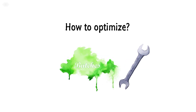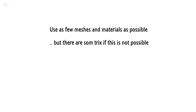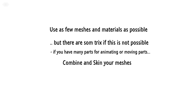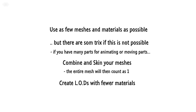How to optimize? The simplest solution is to use as few separate meshes and materials as possible. However, there are tricks that might help when this is not possible. If you need many parts — for example, animating or moving something inside a unit — you can combine all meshes into one and skin them to bones. This way the entire mesh can still be animated but still only counts as one mesh. You can also create LOD steps that have fewer materials far away, maybe even a single material composed of a low-res texture baked from your original materials.